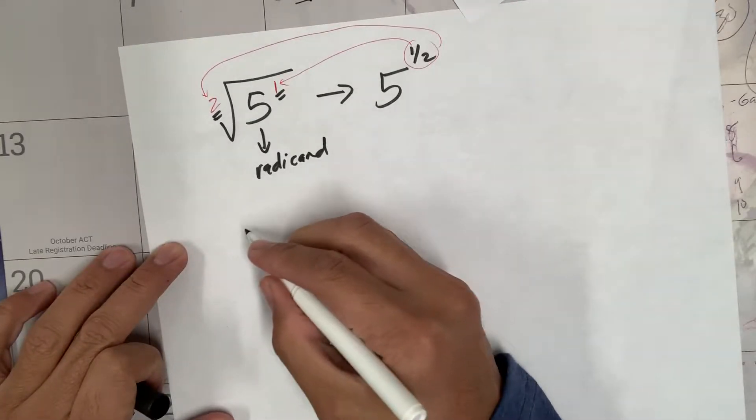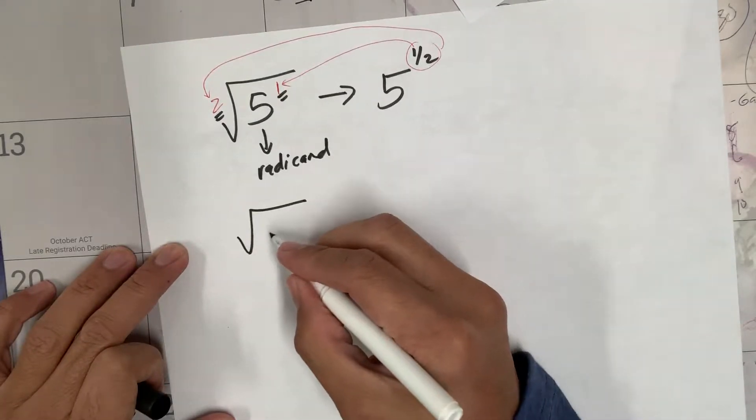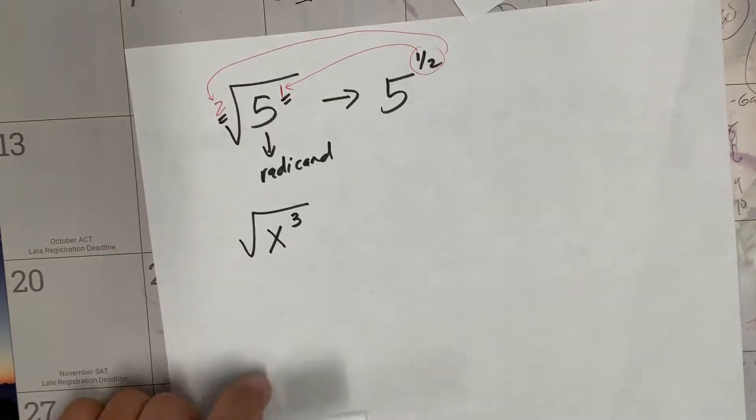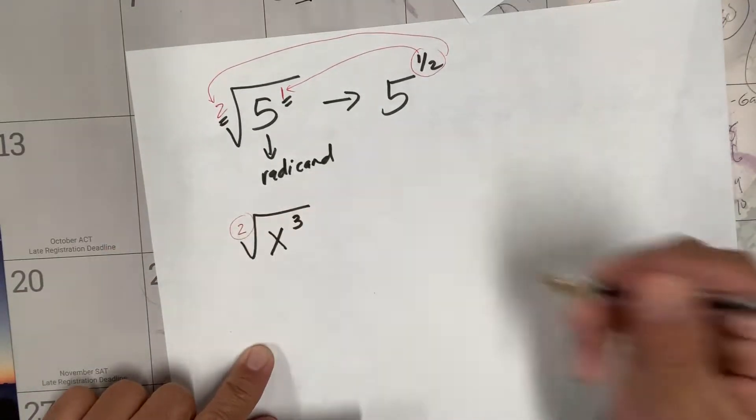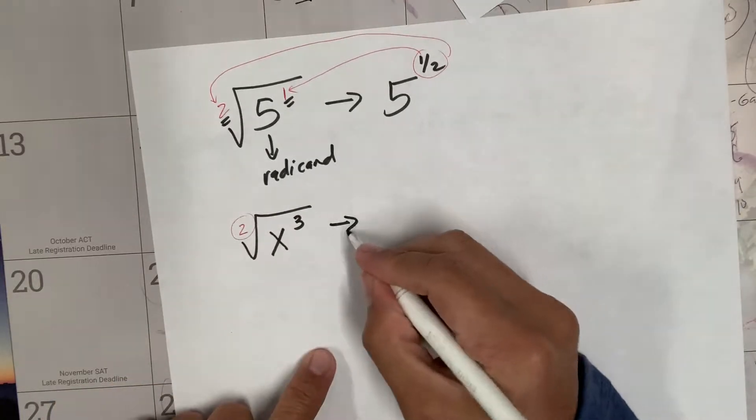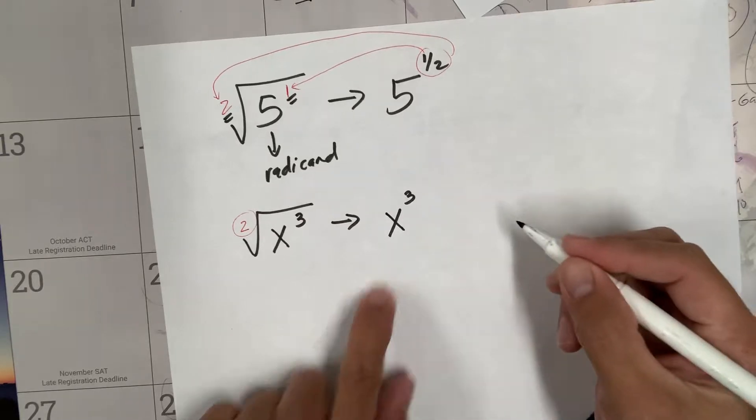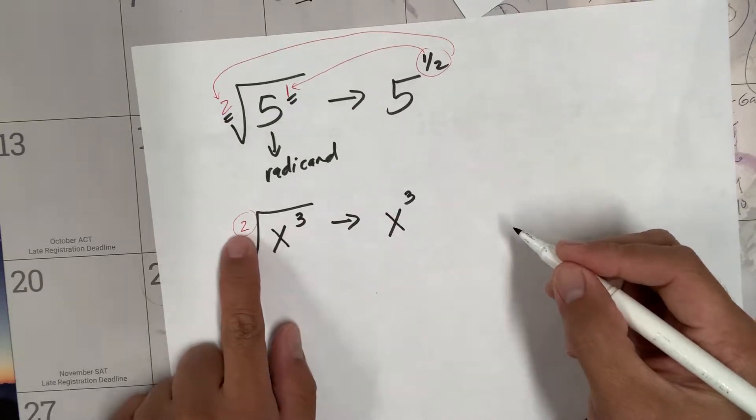One more. Say, square root of x to the third power. Again, what's the invisible root here? You're right, it's two. So the exponential form of this is x cubed, because of this three here, and since the root is two, over two.